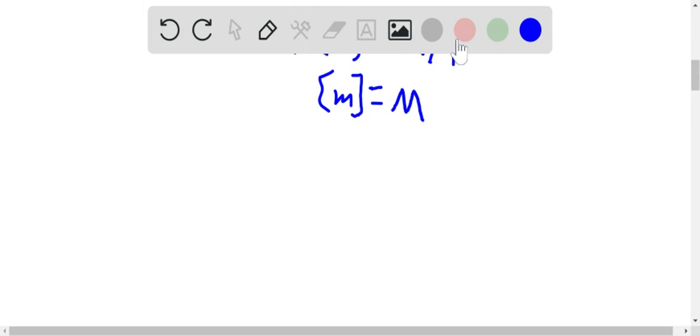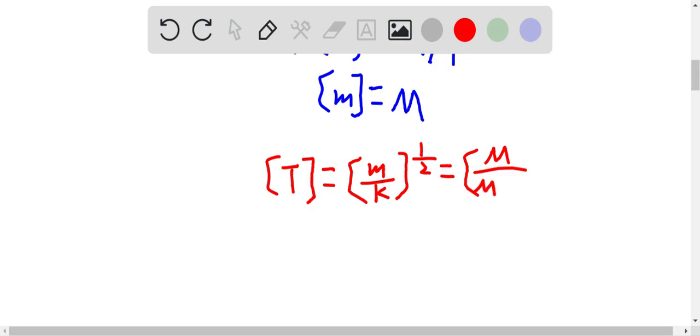We'll have time period is equal to m over k to the power of one half, which is equal to m over (m per T squared) to the power of one half. And this will give us (m times T squared over m) to the power of one half.